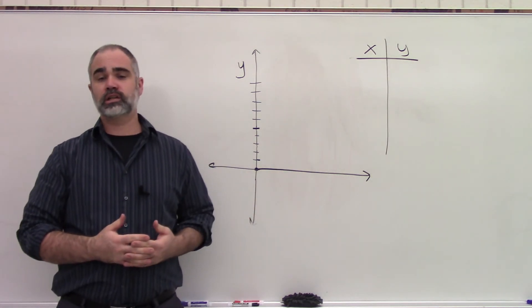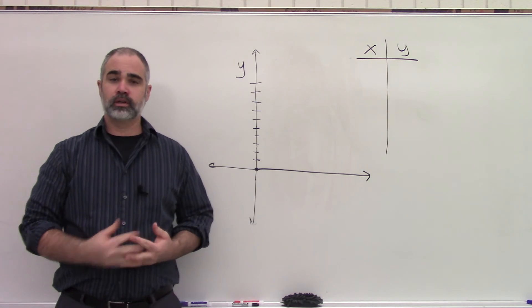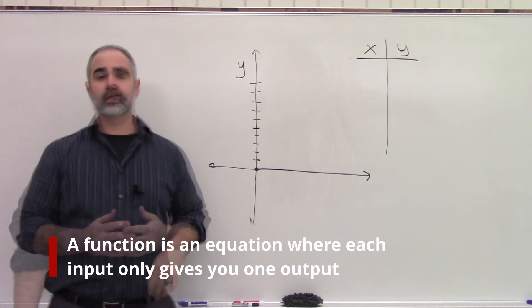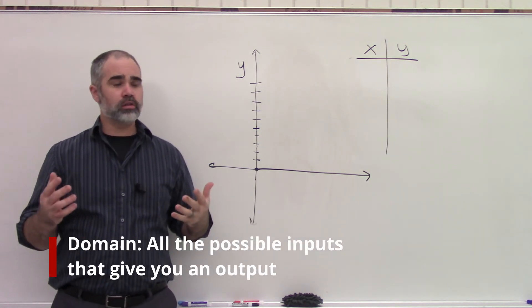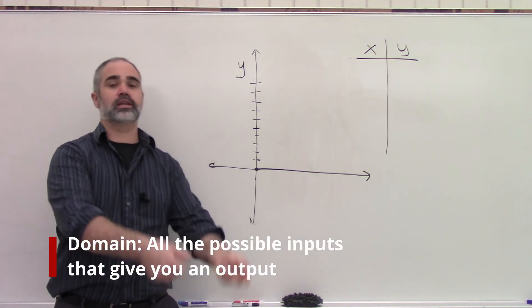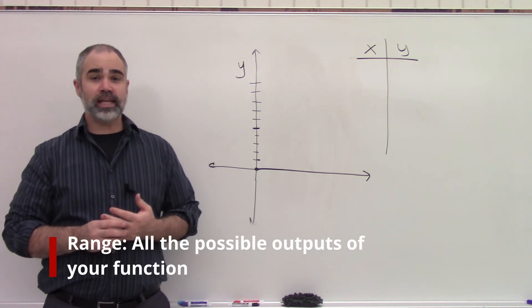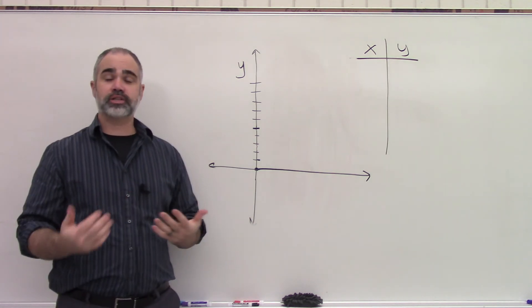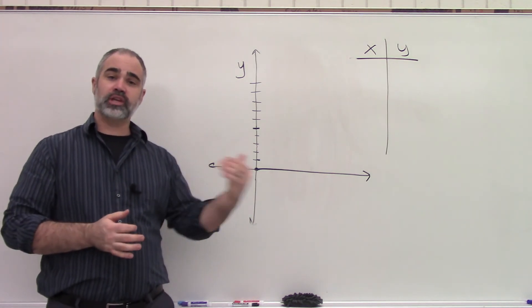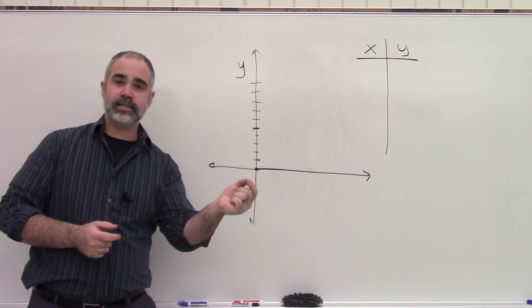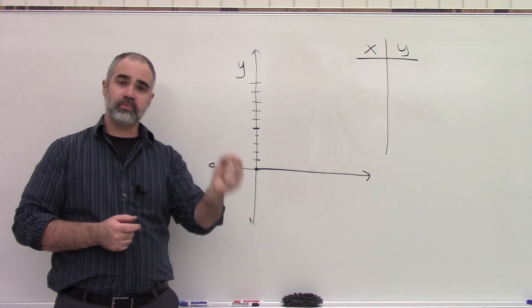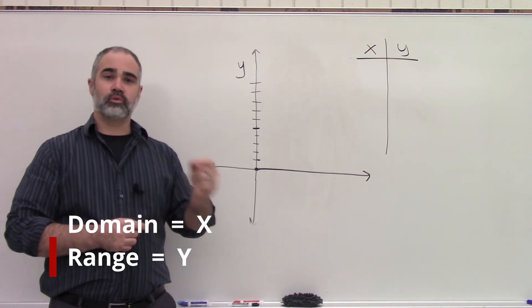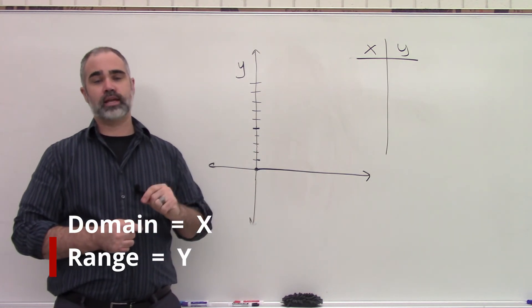So to review: a function, fundamentally, is just an equation with an input and an output. Domain refers to all of the numbers that you can put into your function that give you an output. Range refers to all of the numbers you can get out of your function. A quick trick to remember: D comes before R — domain comes before range in the alphabet — and X comes before Y in the alphabet. So domain goes with X, range goes with Y.